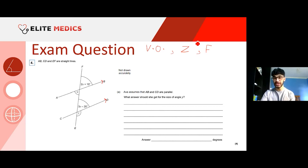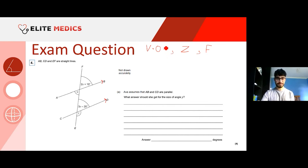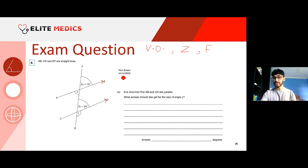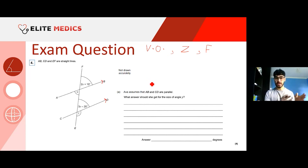As it's a full-mark question, they'll want justification. That means stating something is equal to something else 'because of corresponding angles' or 'because of alternate angles' — give a reason for any rule you've applied, not just basic addition or subtraction.